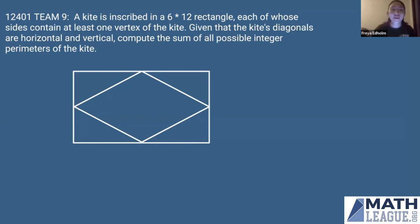All right, so I'm going to be going over problem 12401, team round number nine. So the problem reads as follows: A kite is inscribed in a 6 by 12 rectangle, each of whose sides contains at least one vertex of the kite. Given that the kite's diagonals are horizontal and vertical, compute the sum of all possible integer perimeters of the kite.